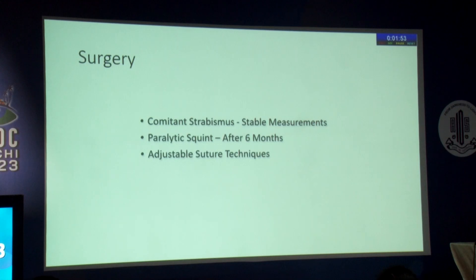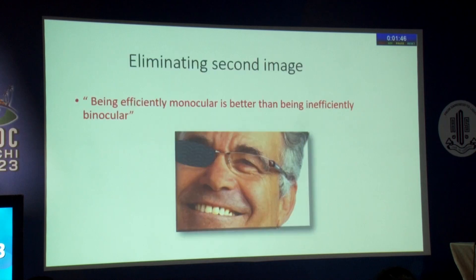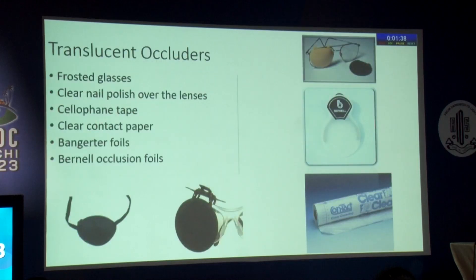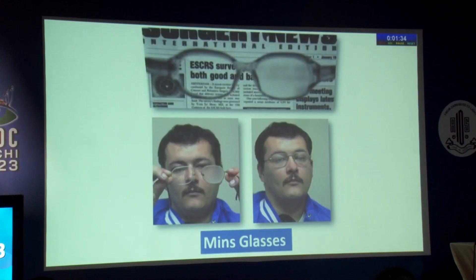Surgery is needed whenever indicated in comitant strabismus. Once stable measurements are obtained, we can operate. In paralytic strabismus, surgery is done after six months, using adjustable suture techniques where needed. The second important option is to eliminate the second image — sometimes being efficiently monocular is better than being inefficiently binocular. Various types of transition occluders are available.